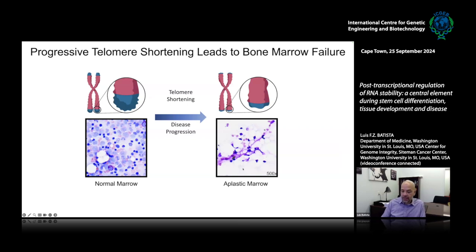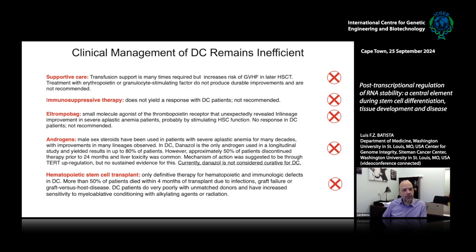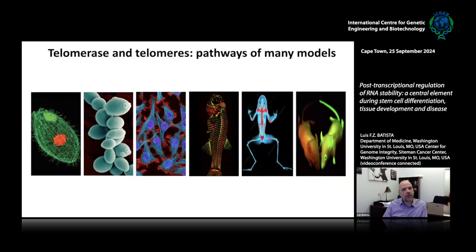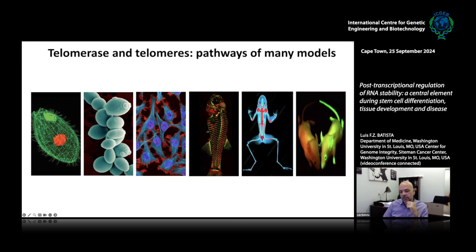Telomere shortening pretty quickly causes a completely aplastic marrow, which is a very toxic condition. Unfortunately, it remains without a cure. The best chance these patients have so far is hematopoietic stem cell transplant; however, it is very hard to find compatible donors and they have a very strong immune response that usually leads to a poor success rate. More research needs to be done to try to improve their quality of life. There's a lot of research done with telomerase in many different models, starting in Tetrahymena — which of course gave Elizabeth Blackburn and Carol Greider their Nobel Prize — all the way to mice, but these models have not been exactly helpful in understanding how dyskeratosis congenita progresses.